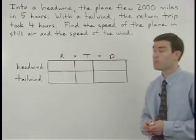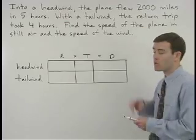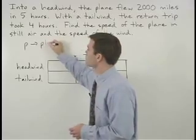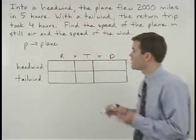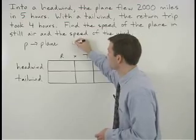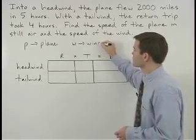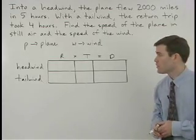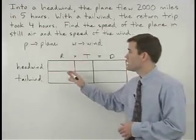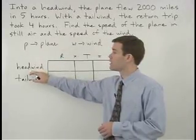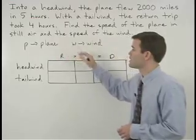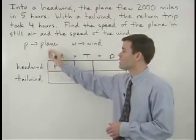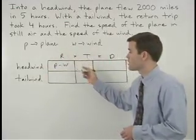If we use the variable p to represent the speed of the plane and w to represent the speed of the wind, then remember from the previous example that we can represent the speed of the plane into a headwind as p minus w and the speed of the plane with a tailwind as p plus w.